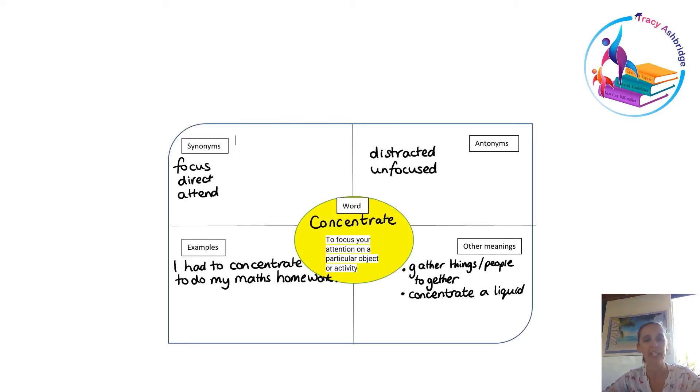Here's one way you can teach a student a word. I've used the word concentrate, put it in the middle, and found a definition for it. Then I think about the synonyms—words that are similar—and the antonyms—words that would be the opposite. If you're distracted or unfocused, then you're not concentrating. I've given an example in a sentence: I had to concentrate to do my maths homework.